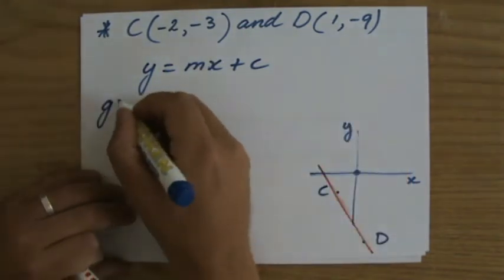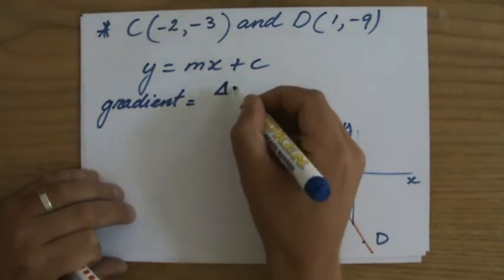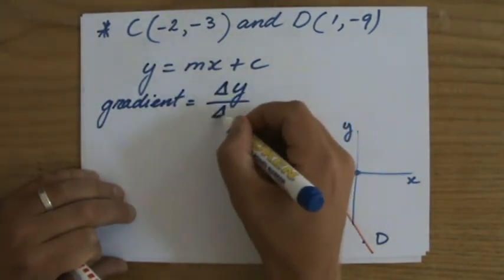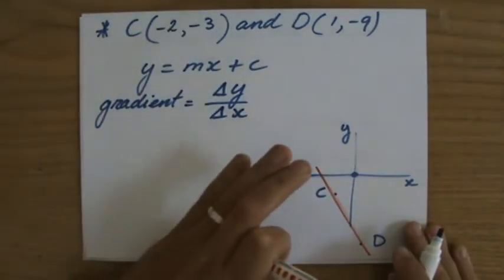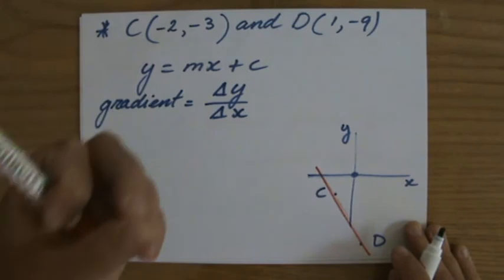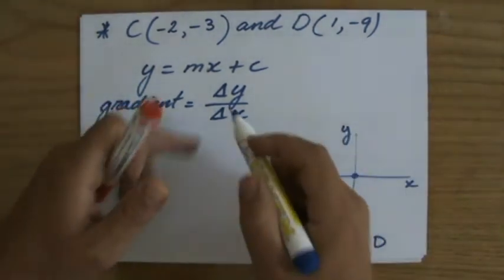We're going to calculate the gradient first. Gradient is the difference in the y-direction over the difference in the x-direction. And I use the symbol delta to describe difference. In previous examples, we have actually given proof that this is true.